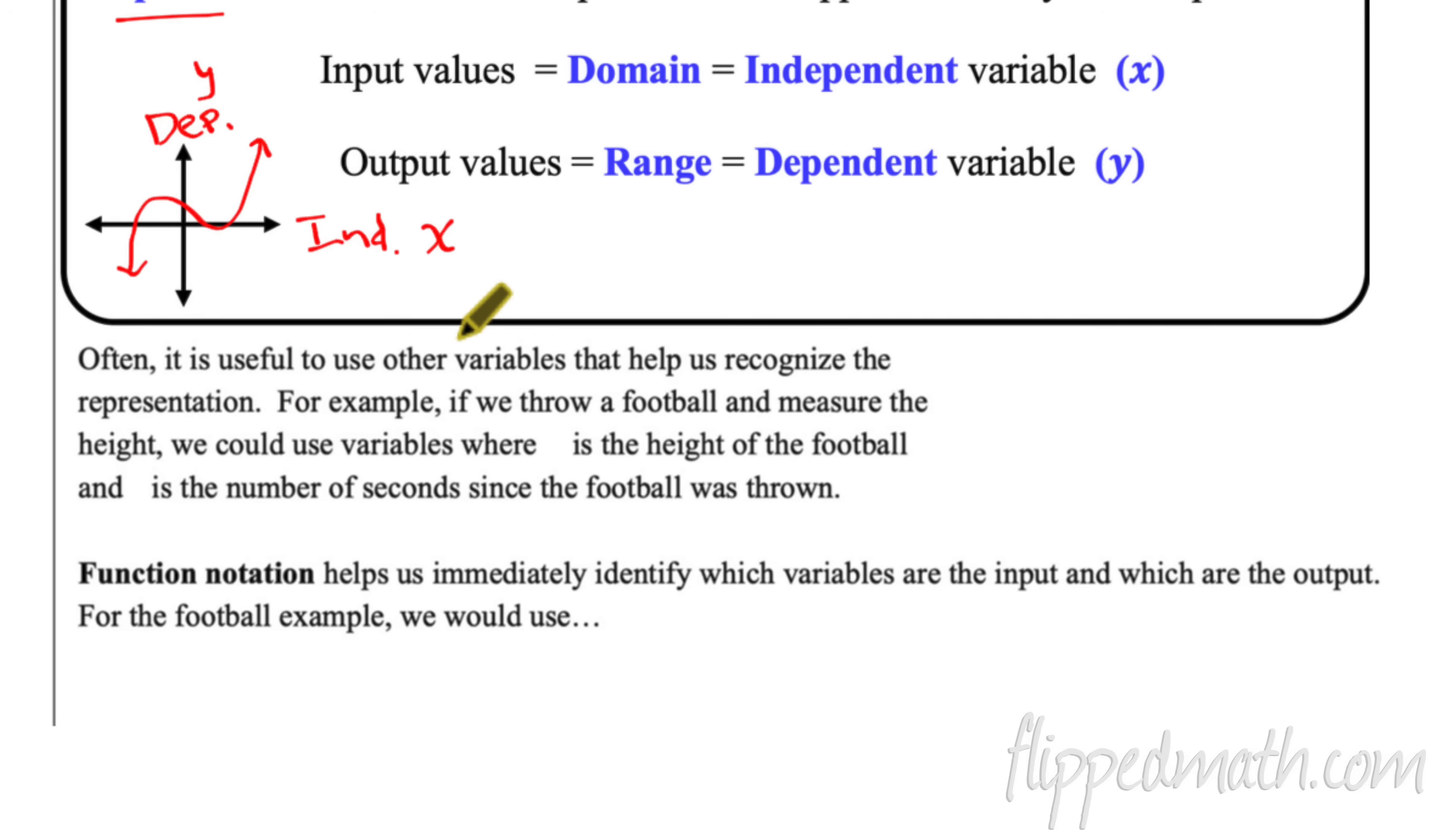Here is a graph of a function and I'll just label, what do we label it? Dependent and independent variable. And as I said normally, we put an X here and we put a Y here. That's traditionally how we did it in Algebra 1 and Algebra 2. It's often useful to use other variables to help us recognize representation. For example, if we throw a football and measure the height, then we could use the variables where H is the height of the football and T is the number of seconds since the football was thrown. Now you have to be careful when you pick your variables. We have to be really clear when we're writing these things. But the point is you can use any variables you want to.